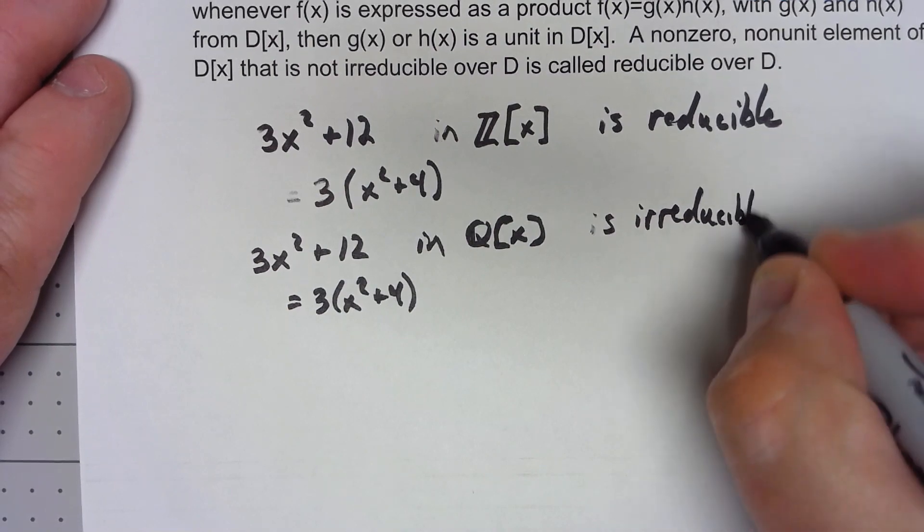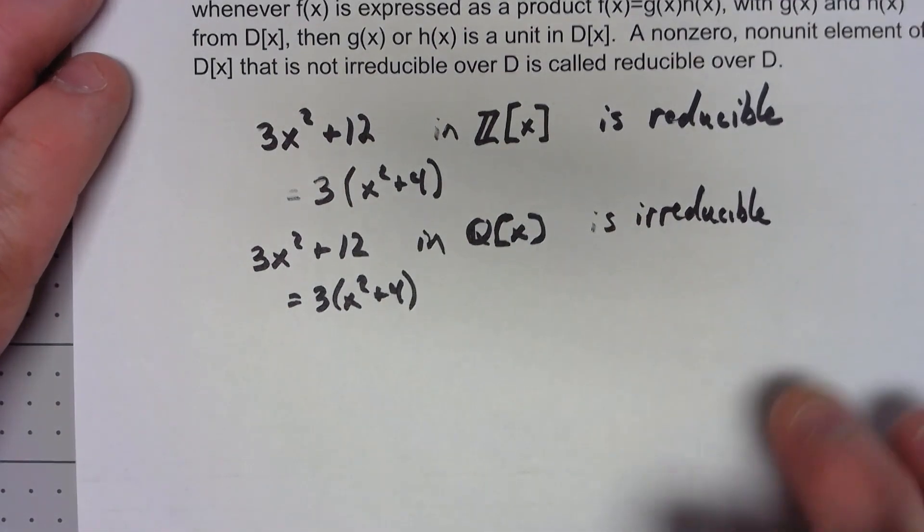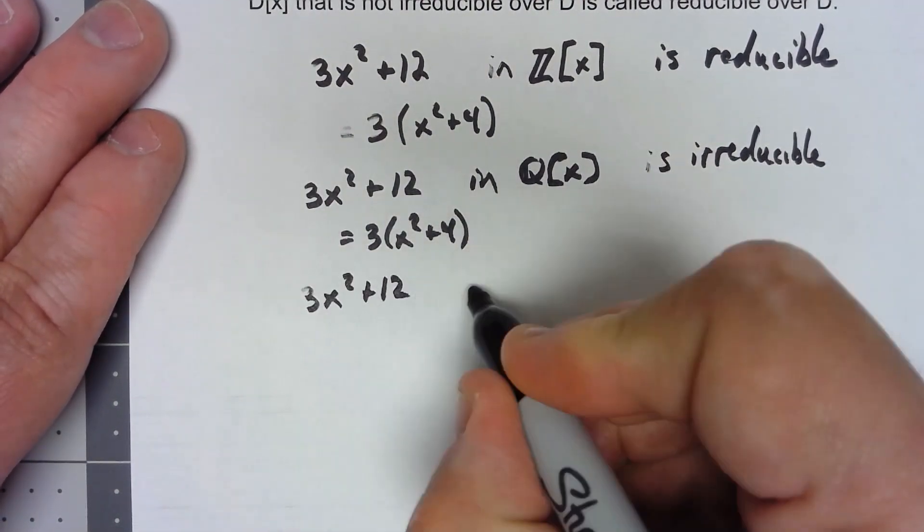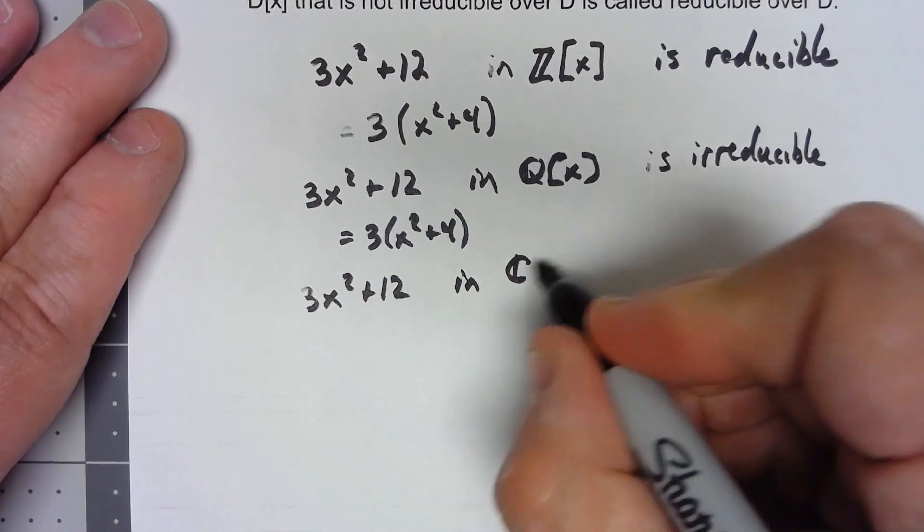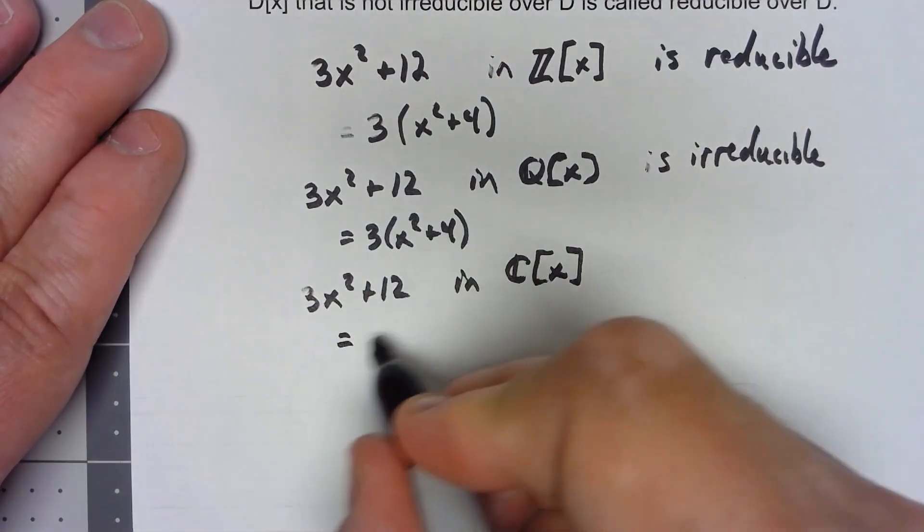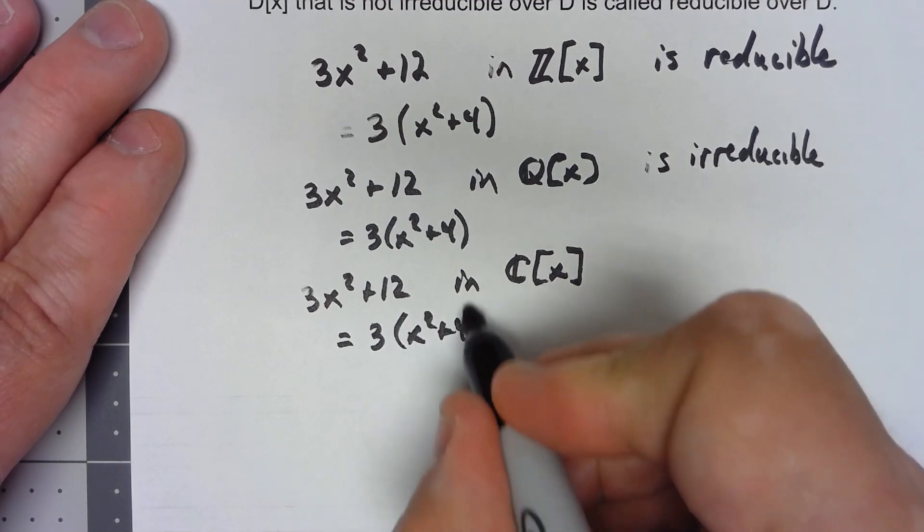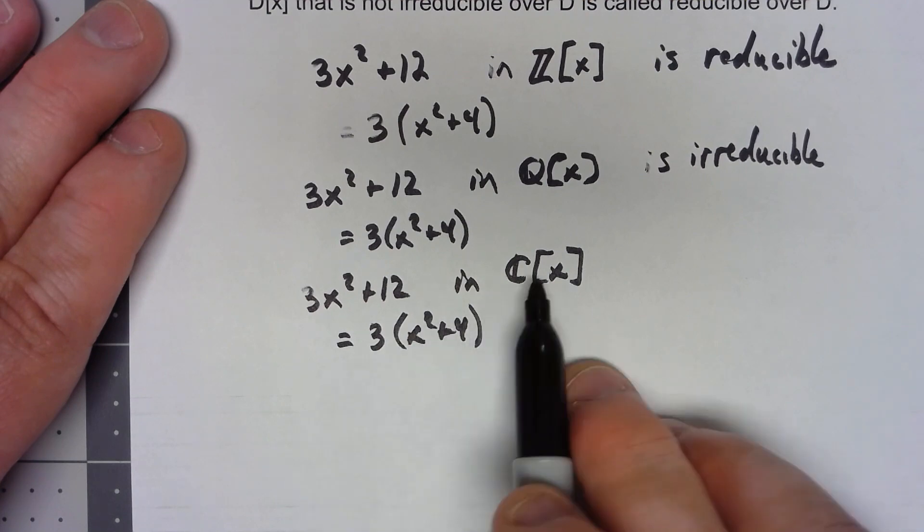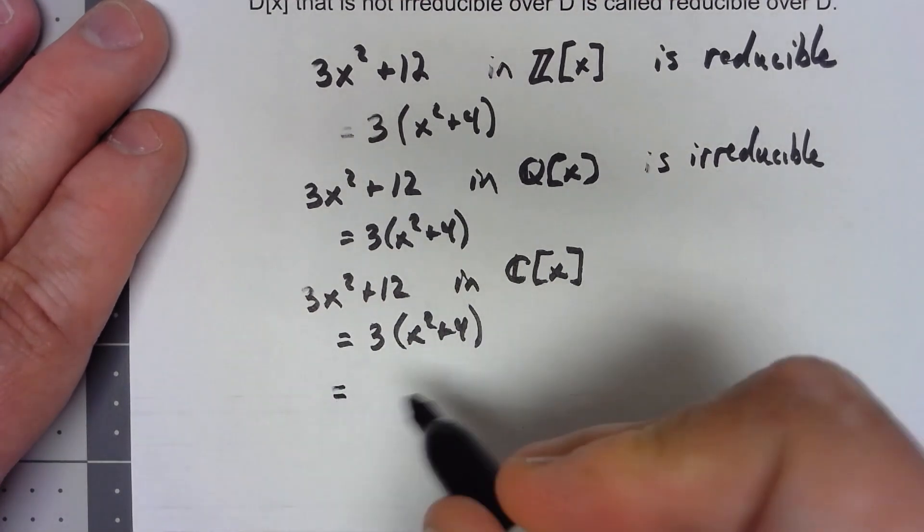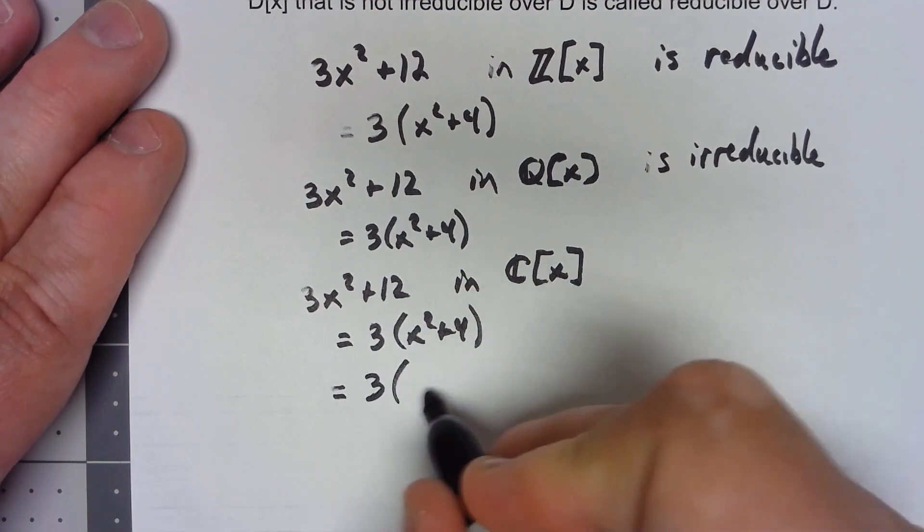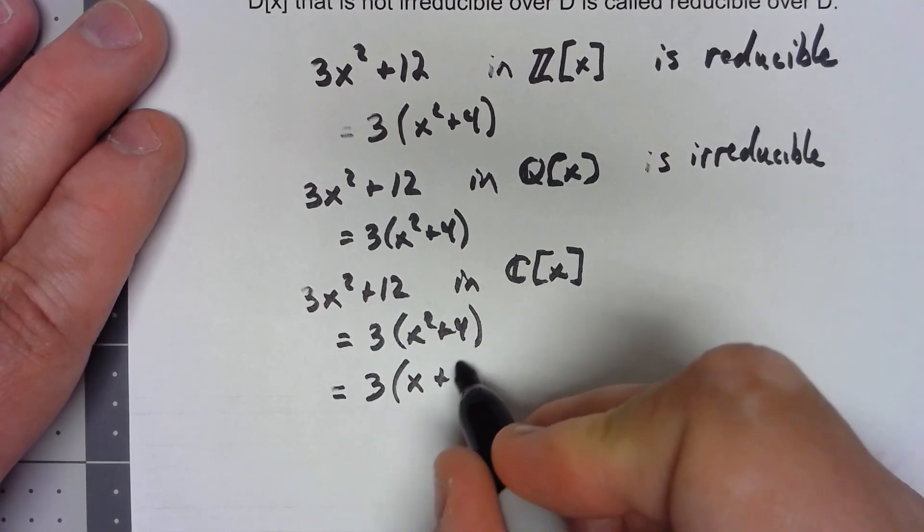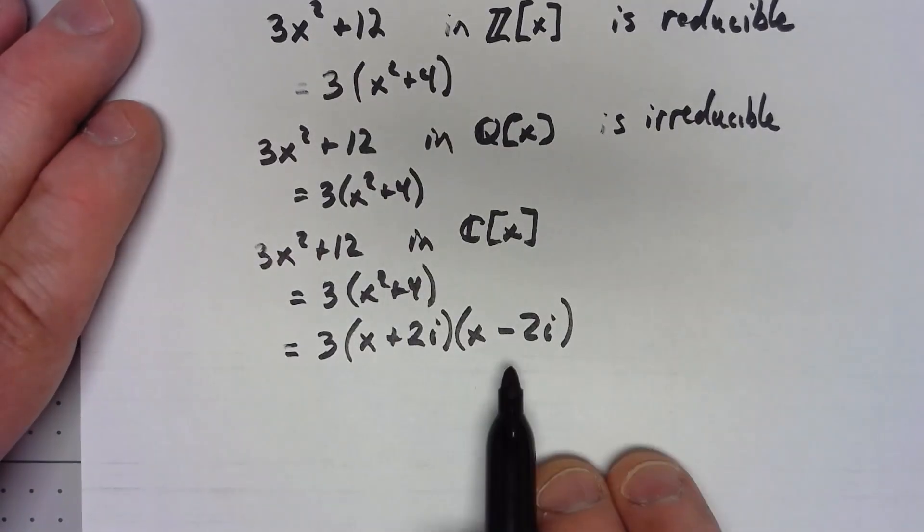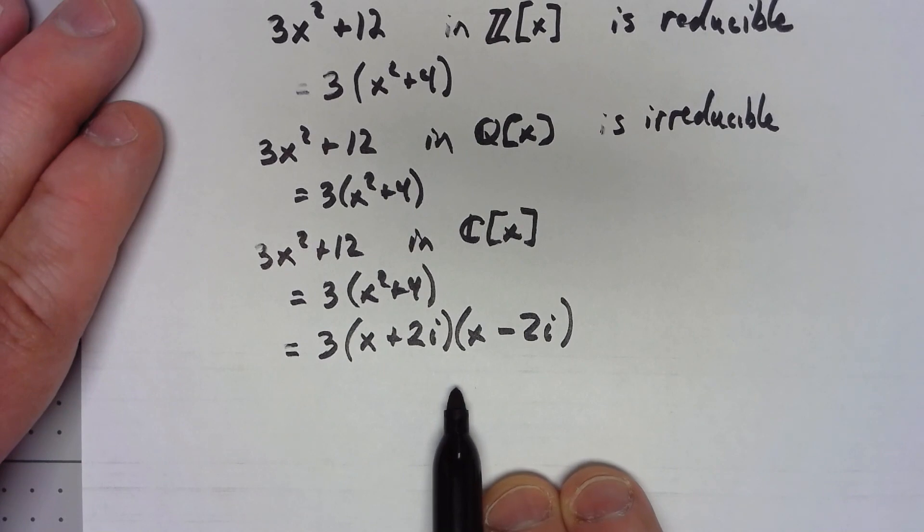But then it gets even weirder because now what if I look at it in C[x]. Now pulling out just a 3, 3 does have a multiplicative inverse in C[x] but this part can break down further and those don't have multiplicative inverses. So it's reducible here.